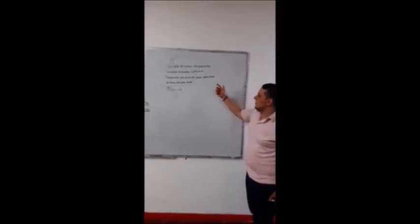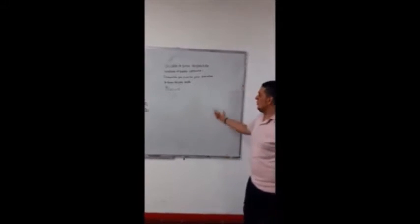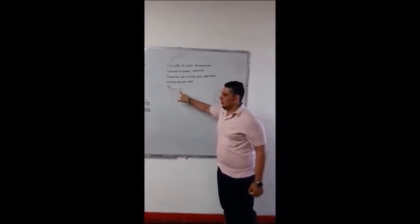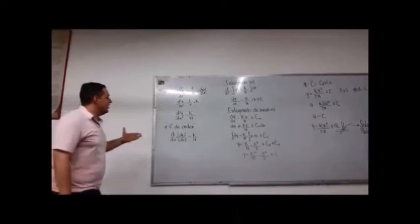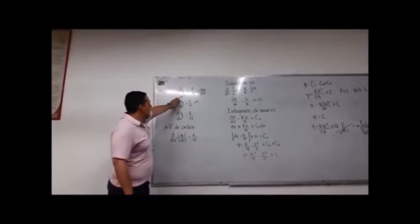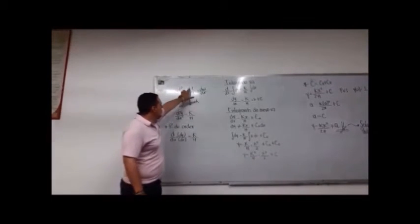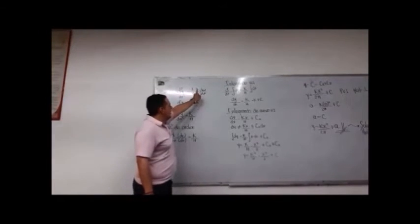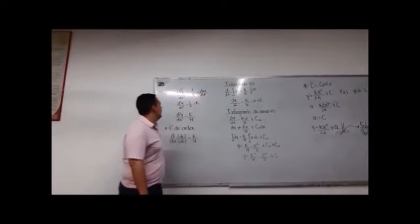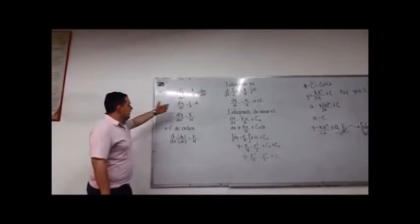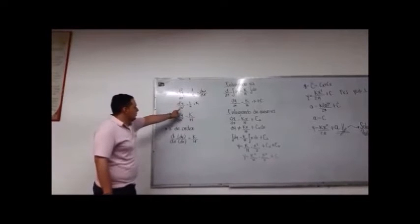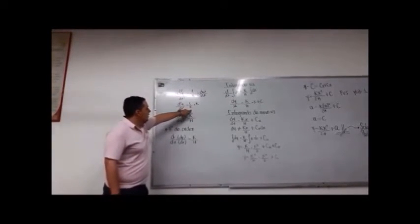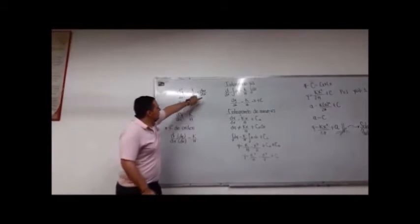Un cable de peso expresado sostiene un puente uniforme. Se determina una ecuación para la forma del cable donde y(0) es igual a cero. El siguiente paso es la segunda derivada de y con respecto a x, igual a 1 sobre H, donde H se calcula por la segunda derivada de w con respecto a x. Esto resulta en d²y/dx² igual a 1 sobre H por k, donde k es la constante.